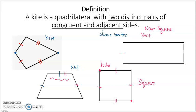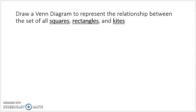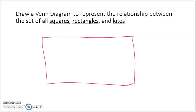That's a little bit about kites. Now let's focus on the Venn diagram: draw a Venn diagram to represent the relationship between squares, rectangles, and kites. I'll start again with my universal set being the set of quadrilaterals. Kites and rectangles — we've already said that squares are kites, so all squares are kites. Some of the rectangles are squares, and so this is the set of kites.